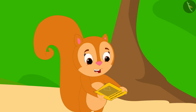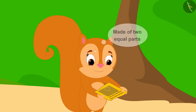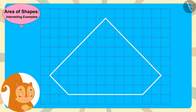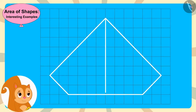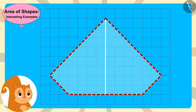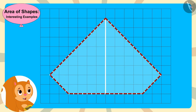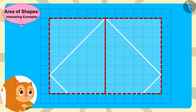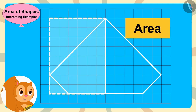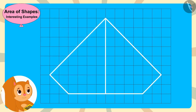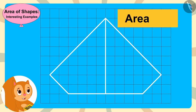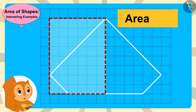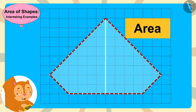This diamond's outline is made of two equal parts, thought Chanda. She then drew a vertical line inside the outline of the diamond. Because this diamond is made of two equal parts, if she were to find only the area of one part, she would then multiply that area by two to find the area of the entire diamond.